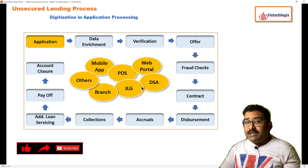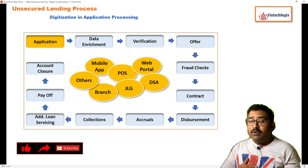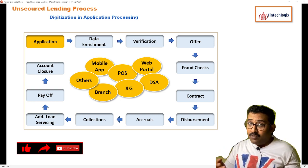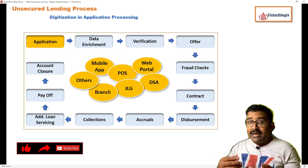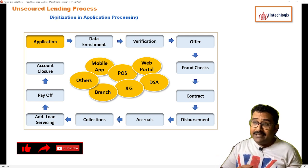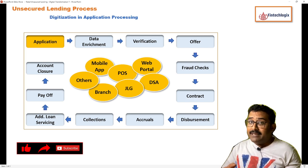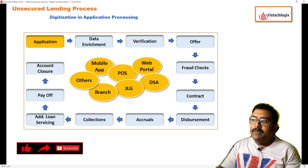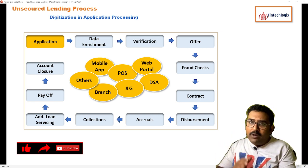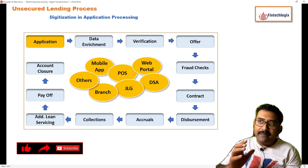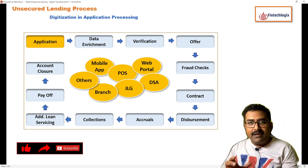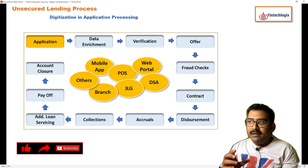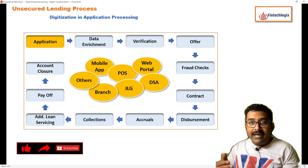The last category is others — specifically embedded finance or third-party systems where the customer goes to get a loan. There has been significant digitization happening in terms of application submission through other third parties as well. Overall, this is about how digitization is changing the application submission process, making it simpler and less tedious for the customer while also reducing turnaround time considerably.